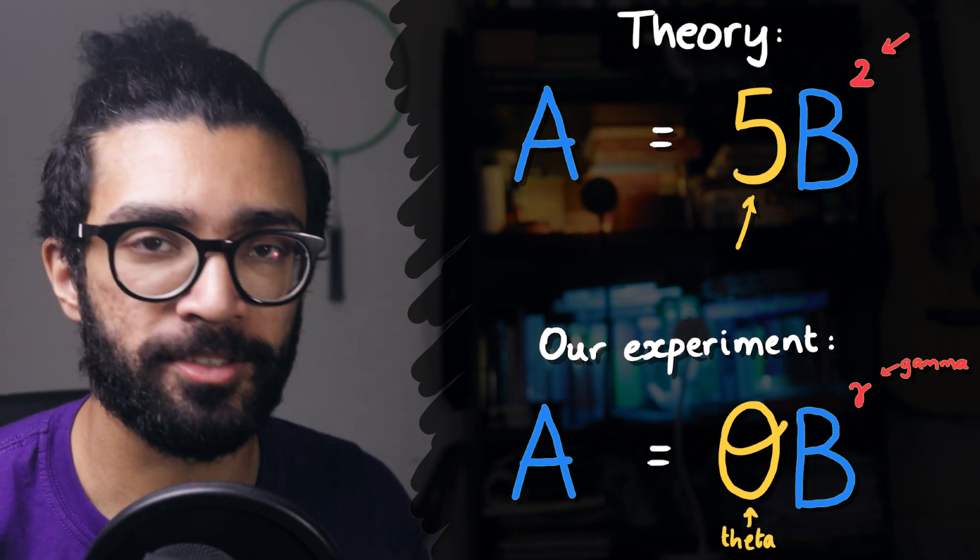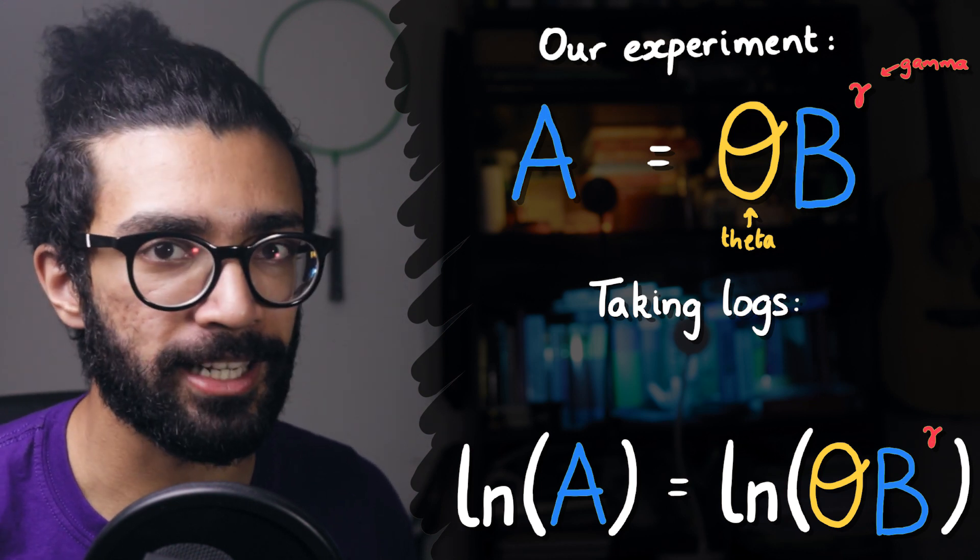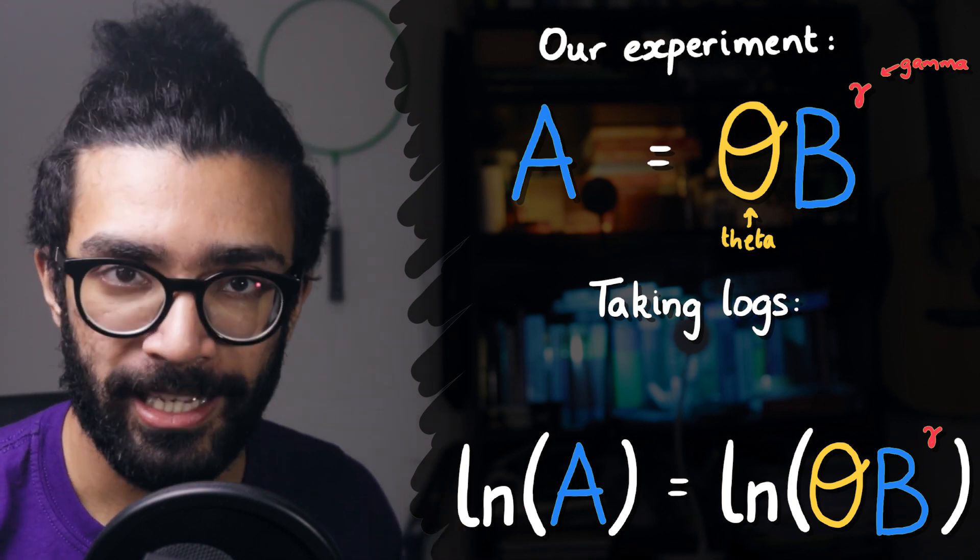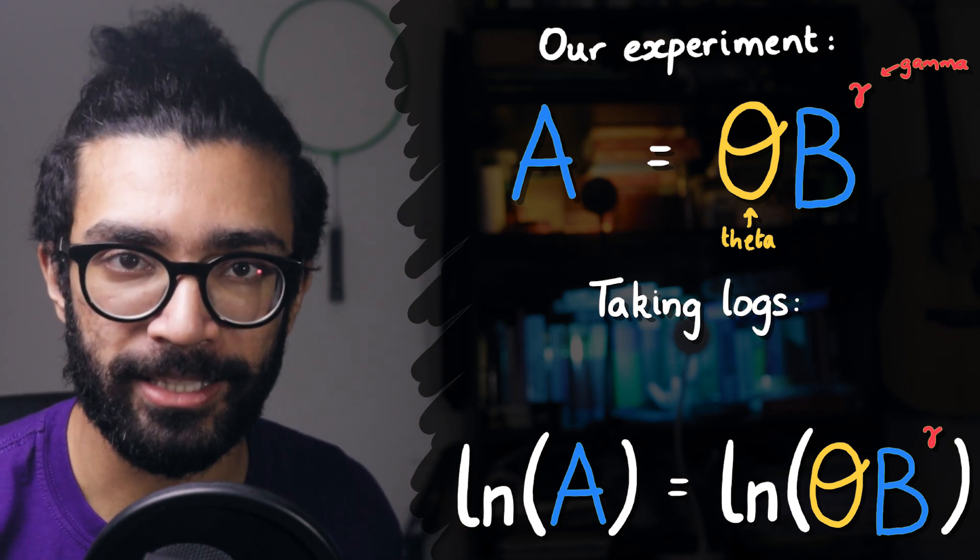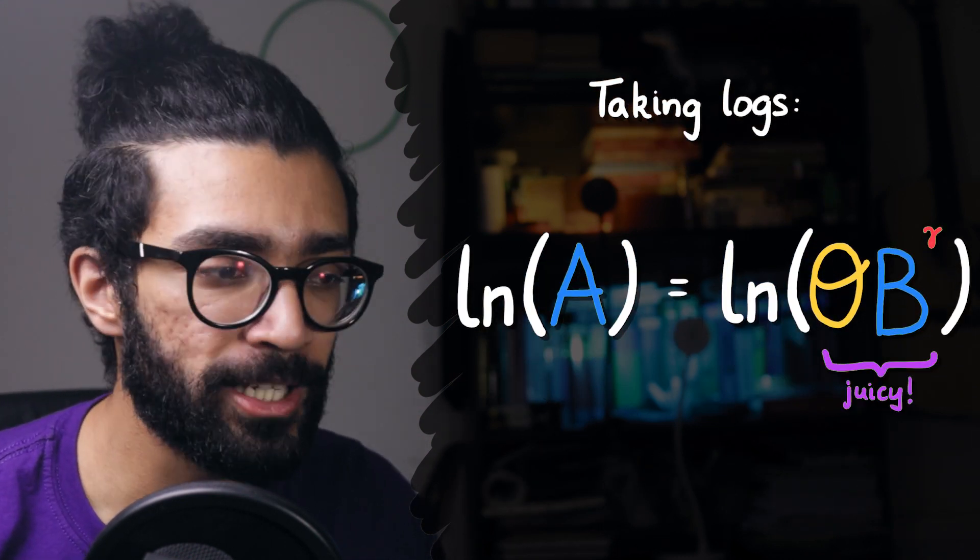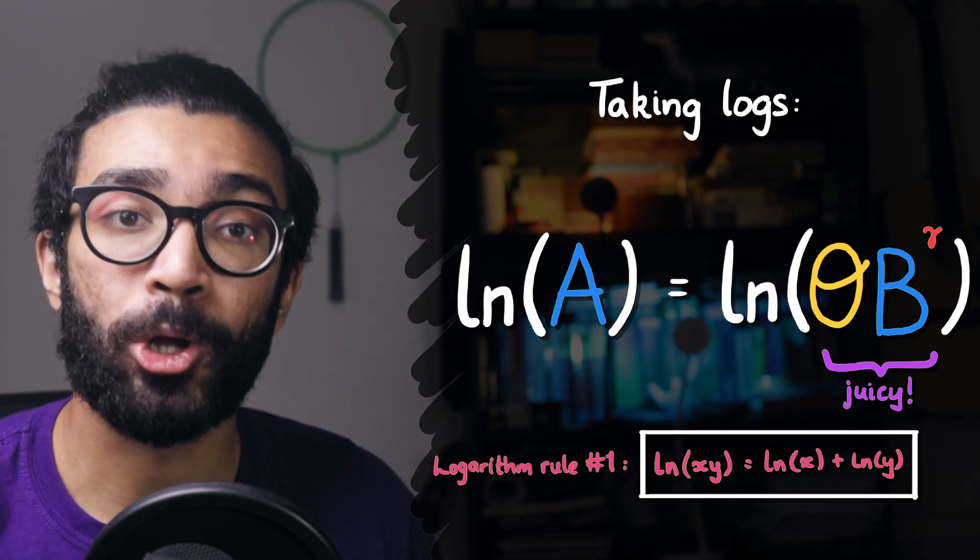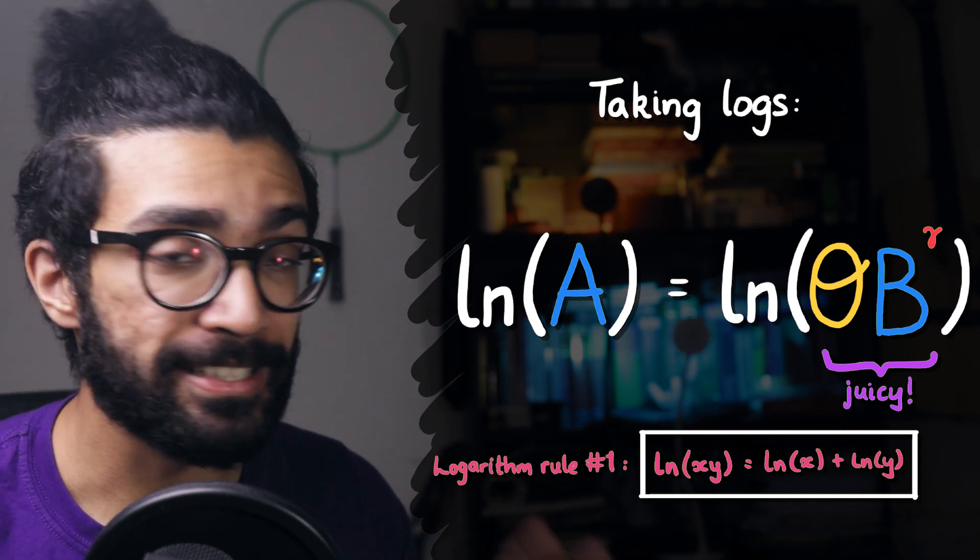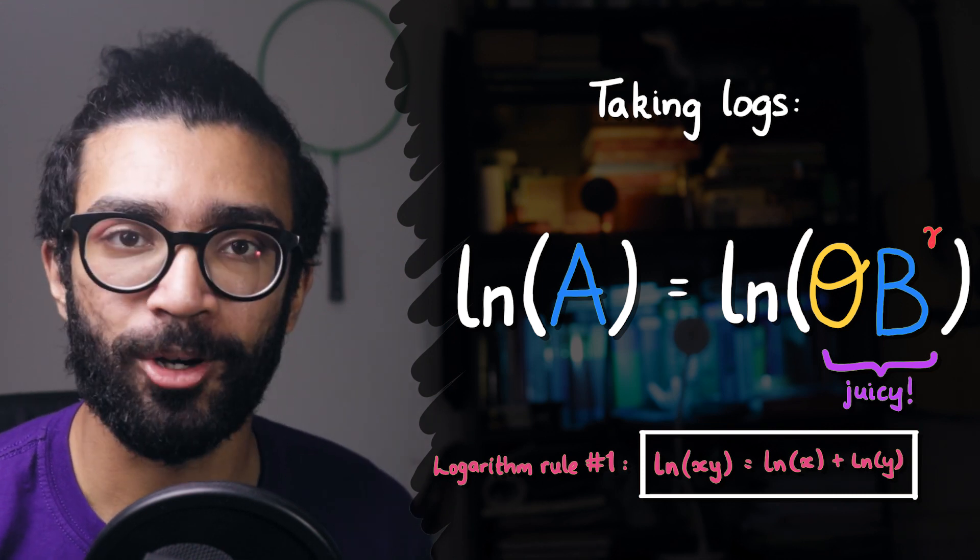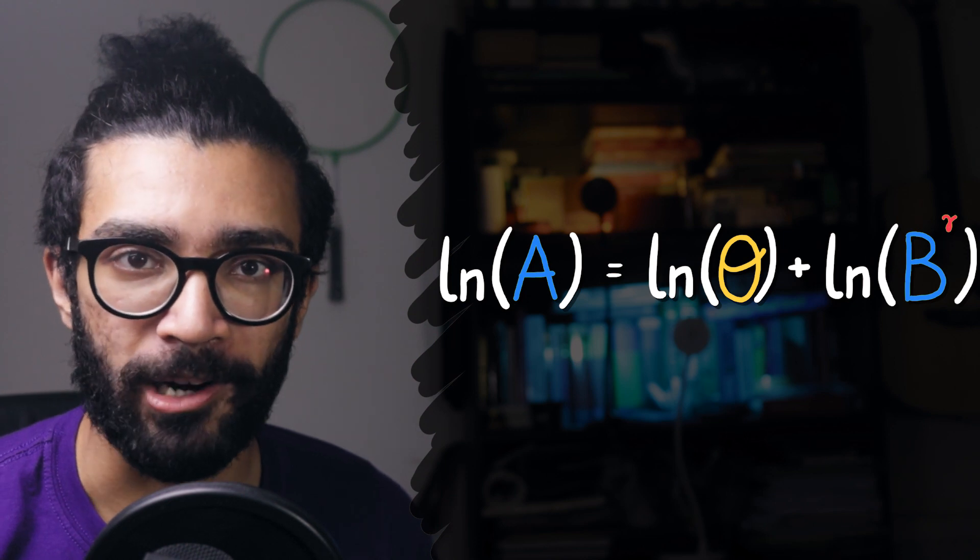Let's now take logarithms of both sides of this equation. So for simplicity, I'll be using the natural log ln, or lawn as some people like to call it, and when we do take natural logarithms of both sides, we find that the log of A is equal to the log of theta B to the power of gamma. Now on the right hand side, we've got this juicy multi-component term, and we can use the rules of logarithms to break this up a little bit. Specifically, we can remember that the logarithm of a product of two quantities is equal to the logarithm of the first quantity plus the logarithm of the second quantity, and so we can write the right hand side as the natural log of theta plus the natural log of B to the power of gamma.